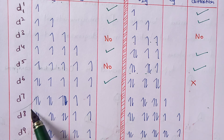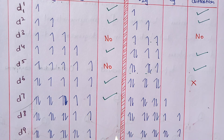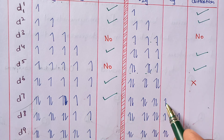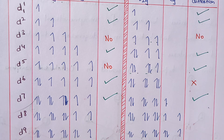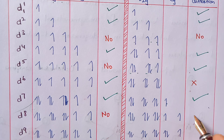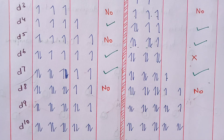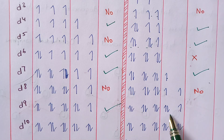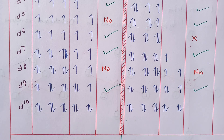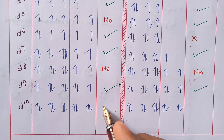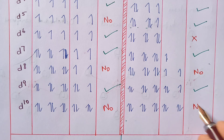D7 in weak field shows unequal distribution, so Jahn-Teller distortion is present. In strong field D7, there is also unequal distribution and distortion occurs. D8 has symmetrical distribution in both weak and strong field — no distortion. D9 shows unsymmetrical distribution and distortion. D10 has everything completely filled and symmetrically distributed — no distortion.